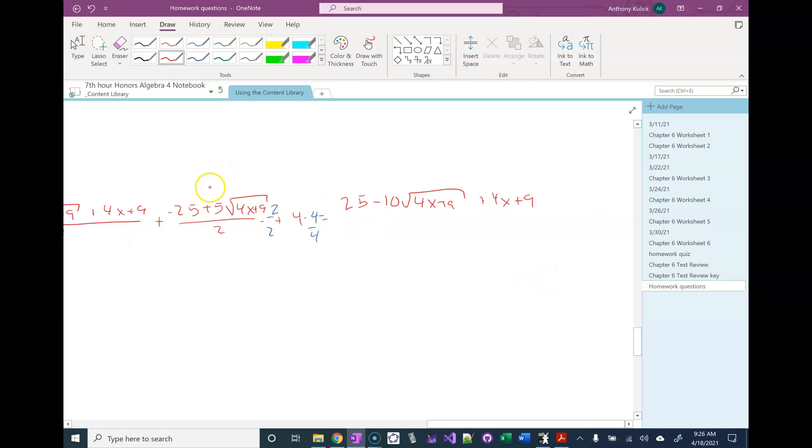So when I distribute that 2 through, I'm going to have a minus 50. I have a minus, oh I'm sorry, plus 10 square root 4x plus 9, and then plus 16.